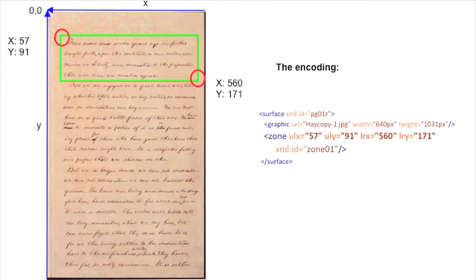Okay, is that clear? I know it's not the easiest thing to do, but the image there and the example should be clear enough. It is also very important that you put an XML ID on your zone, because if you want to connect it to a transcription, that's where you need to have a referencing system in place.